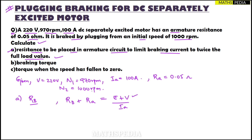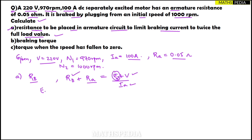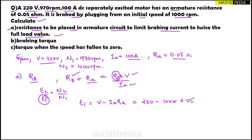We know V = 220 volts and Ia = 100 ampere and Ra = 0.05 ohm. The unknown is E, which we call E2. To find E1 first, we use the formula E1 = V − Ia × Ra = 220 − 100 × 0.05 = 215 volts.